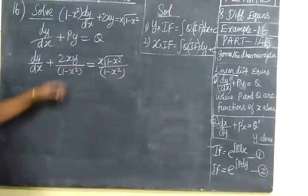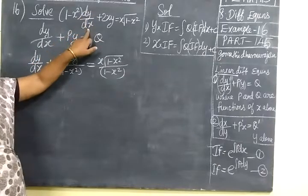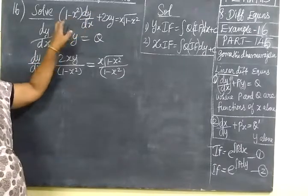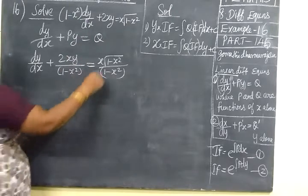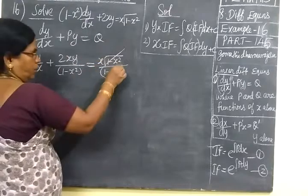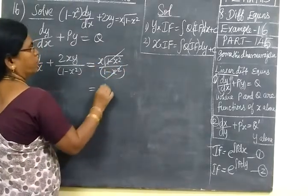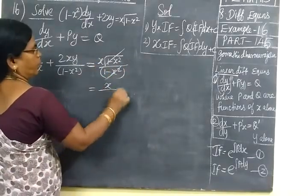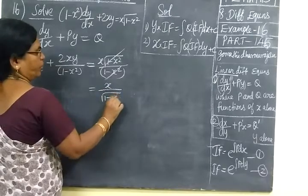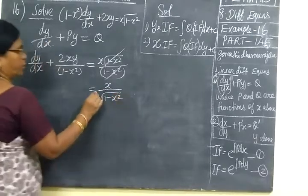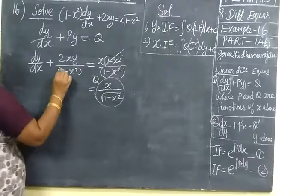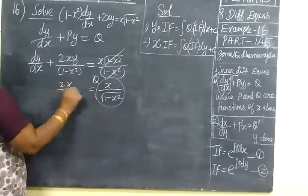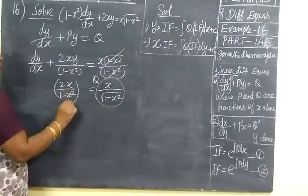On this side only dy/dx will be there. So you are dividing the whole thing by 1 minus x squared. The root and the denominator cancel, giving x by root of 1 minus x squared. So this is Q. Then 2xy by 1 minus x squared — this is P.